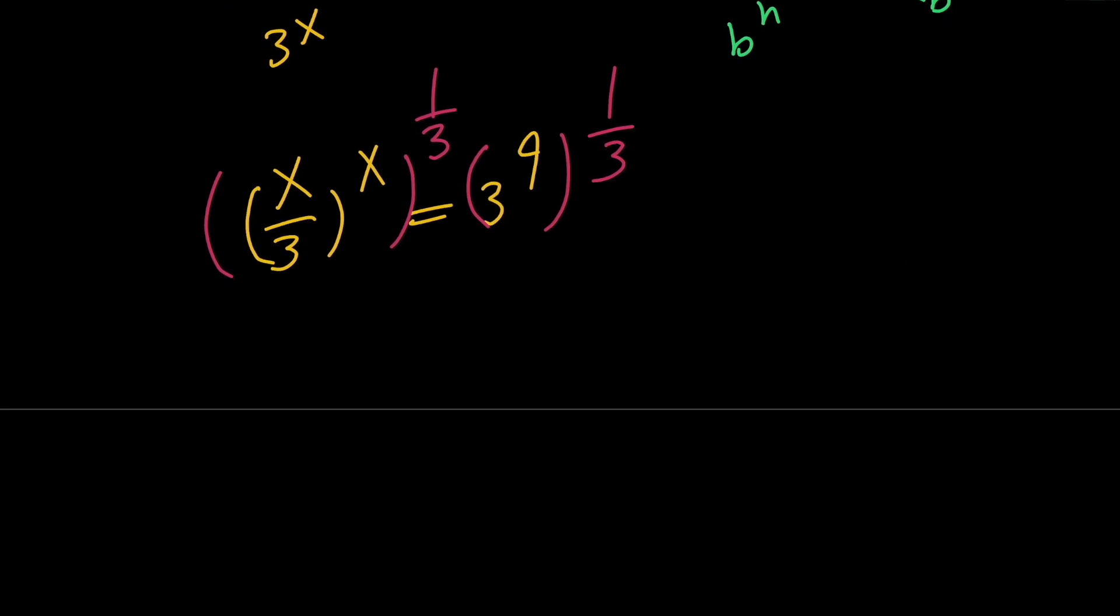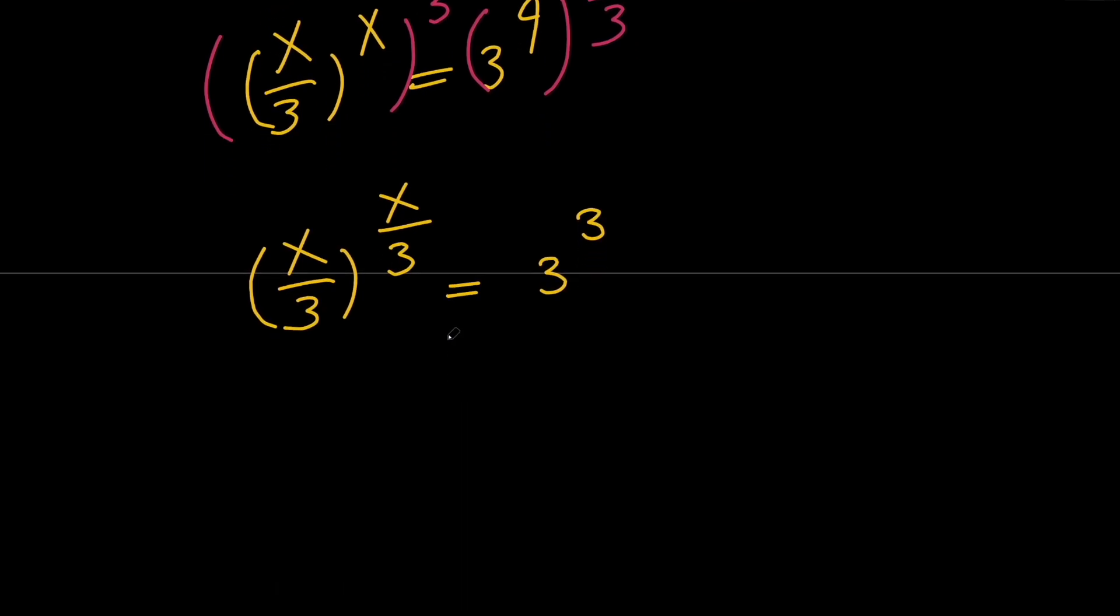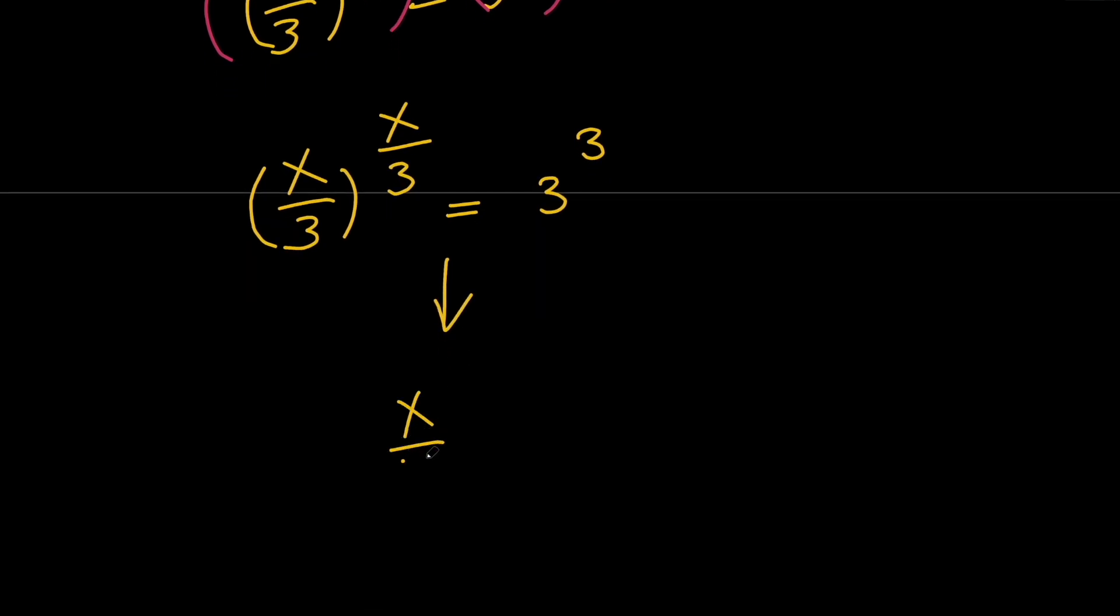And we do that to get the exponents whose power is equal to its base. So by doing that, we're going to have x over 3 to the power of x over 3 equals 3 to the power of 9 third, which is 3. And then from this, it is obvious that we can say that x over 3 should equal 3, which means that x equals 9.